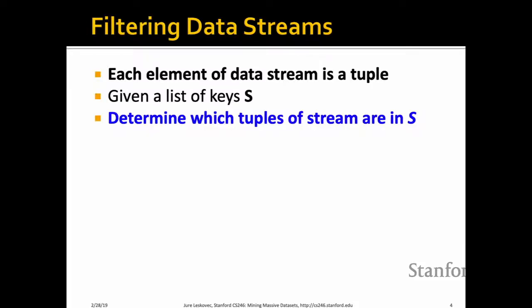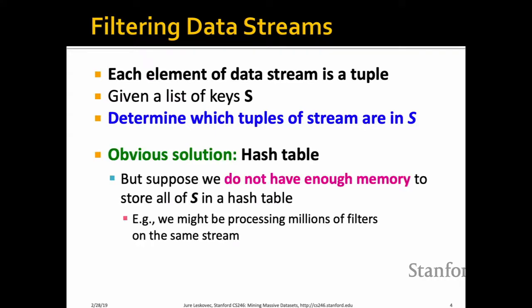First: filtering a data stream. Abstractly, we think of every element in the stream as a key-value pair, and given a set of keys S, we want to determine if that element is in S. An obvious solution would be a hash table storing all elements of S, so when the next stream element comes, you test it against the hash table. But what if you don't have enough space to store this hash table?